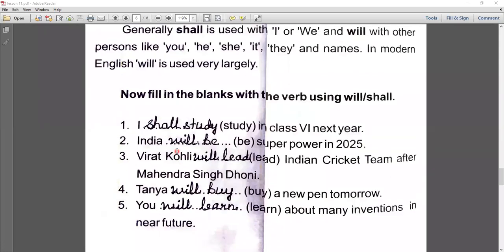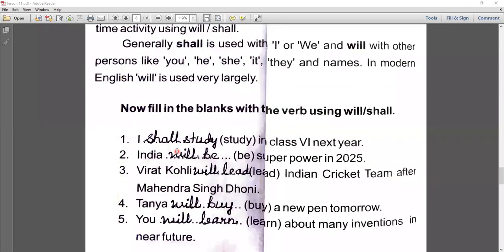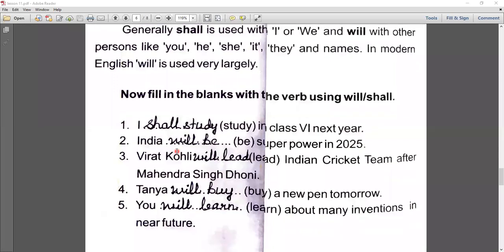So first sentence is here: I blank study in class 6 next year. When we are talking about next year, what will we use? I - what will we use? Shall. We will use the verb in first form: shall study. So here the person is I. We use the pronoun I, so here we use shall study.